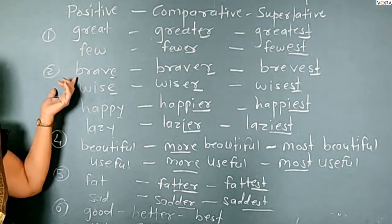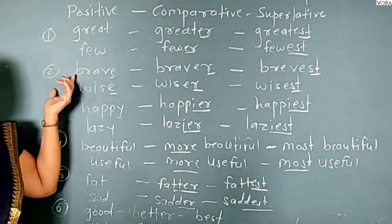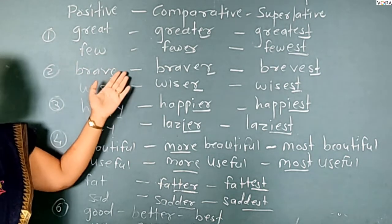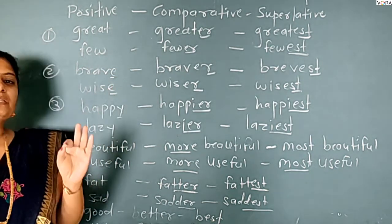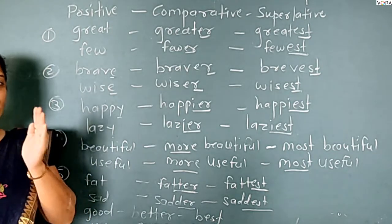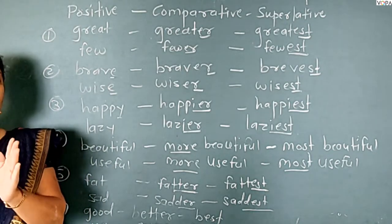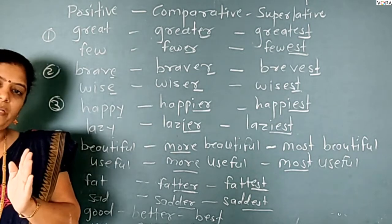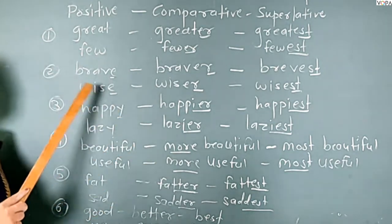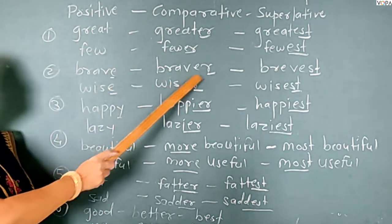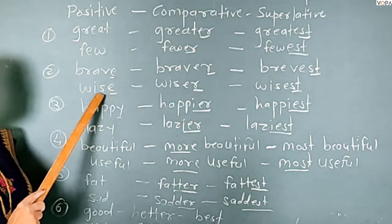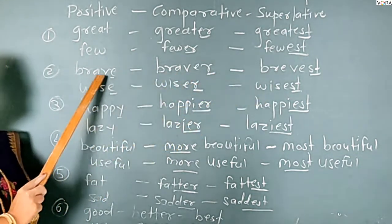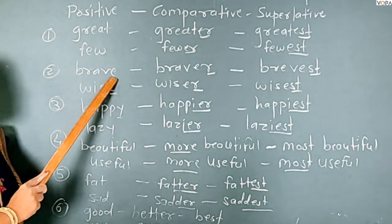Second rule: we should add the letters E-R for comparative and E-S-T for superlative. That is the comparative form and superlative form. For example: brave, braver, bravest. Wise, wiser, widest — when the word ends in the letter E, we simply add R or ST.